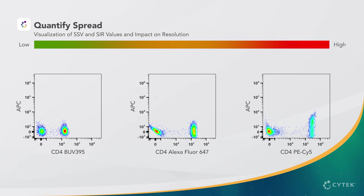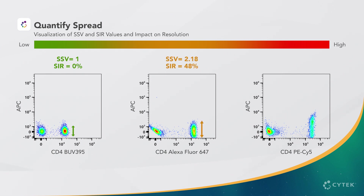Here, we can see how the resolution of APC changes when used with three different fluorochromes. With BUV395, the values for SIR and SSV are very low. With Alexa Fluor 647, the spread, SSV, and SIR are moderately higher. When using PEC5, the spread and values are even greater.